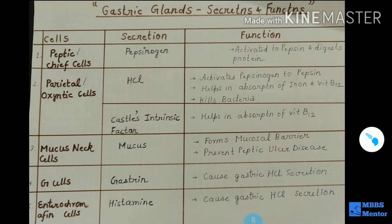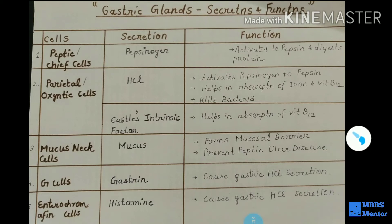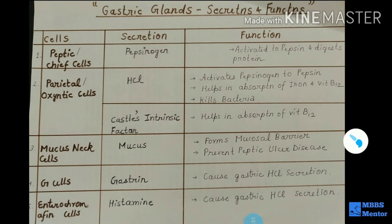In many cases, what happens is the mucus lining gets ruptured or reduced. So pepsin reaches the stomach lining and starts digesting it. This condition is called ulcer formation. So the function of mucus is to form the mucosal barrier and prevent peptic ulcer disease.